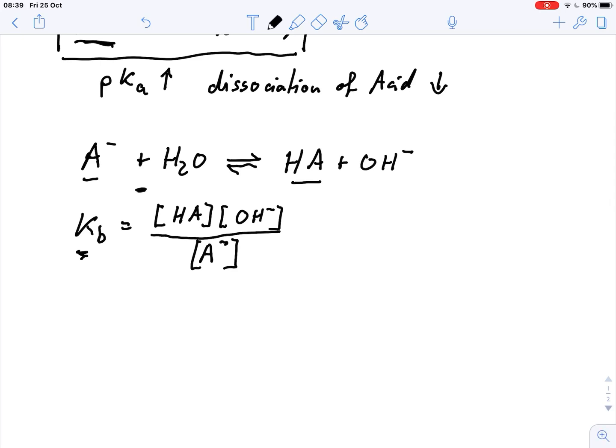And again we might get something very small for Kb, and therefore people have established the pKb value. pKb is defined as the negative log to the basis of 10 of the Kb value.